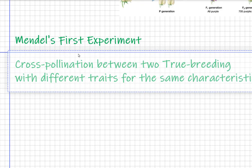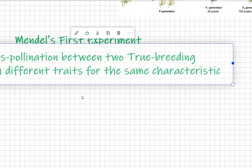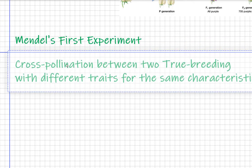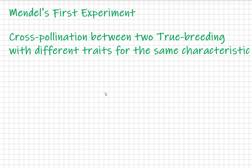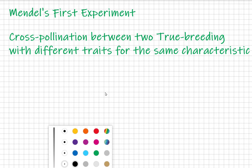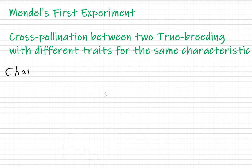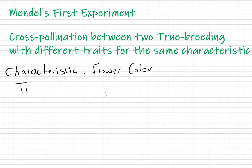The characteristic we are discussing is flower color, and the two traits are purple and white. We start the explanation knowing that purple is dominant over white.